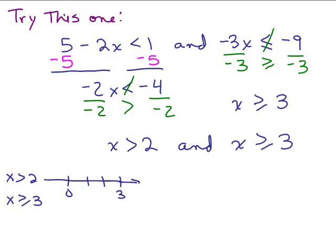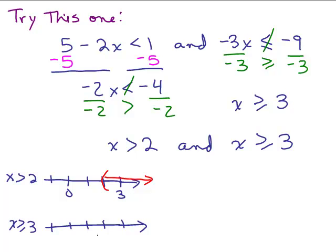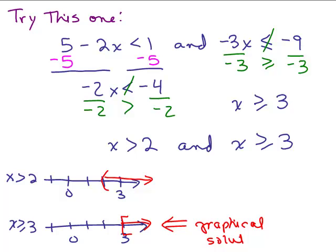We have X is greater than 2 and X is greater than or equal to 3. Numbers that are both bigger than 2 and bigger than or equal to 3 are all numbers greater than or equal to 3. Graphing confirms this: the overlap of X greater than 2 and X greater than or equal to 3 starts at 3 and goes to the right. The graphical solution is from 3 to infinity, and in interval notation that's written as bracket 3 to infinity with a parenthesis.